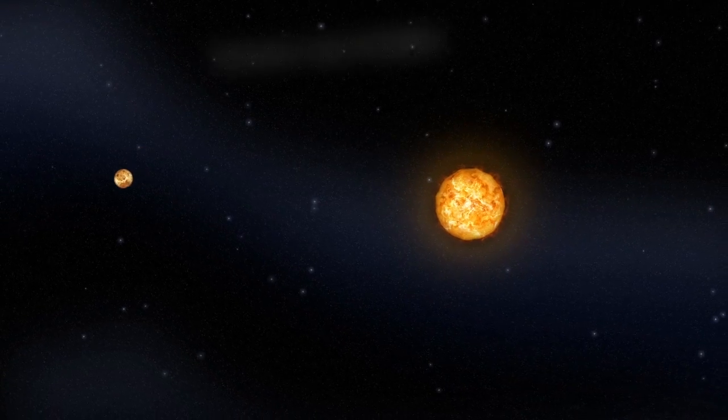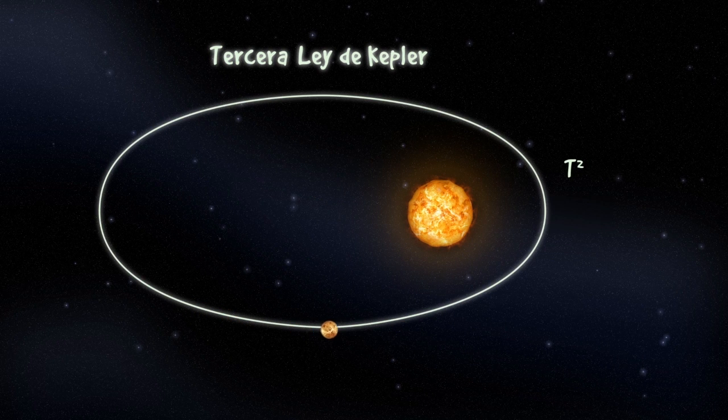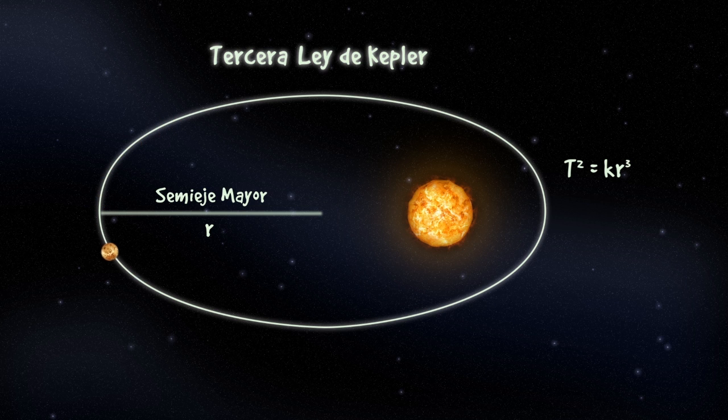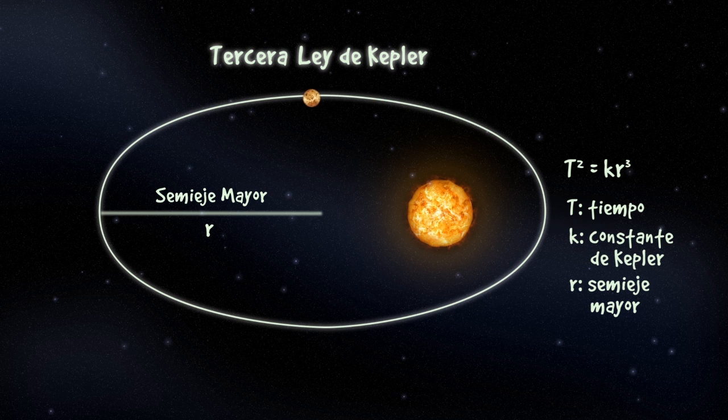Además, Kepler descubrió en su tercera ley que el cuadrado del tiempo que le toma al planeta orbitar alrededor del sol es proporcional al cubo del semieje mayor de la órbita descrita, t cuadrado igual a k por r al cubo, donde t es el tiempo, k es la constante de Kepler y r es el semieje mayor. Esta ley se utiliza para poder determinar el periodo que le toma a un planeta dar una vuelta completa sobre su órbita.